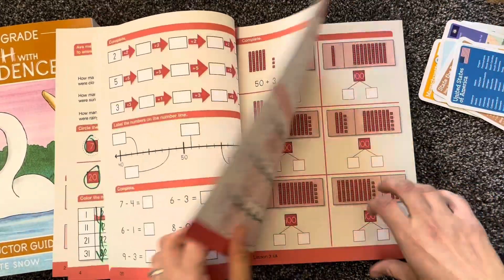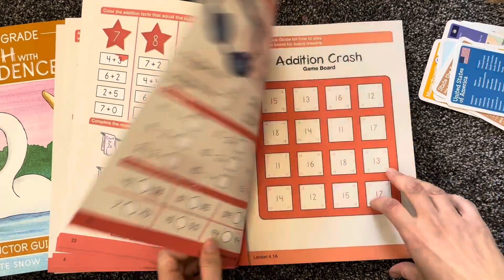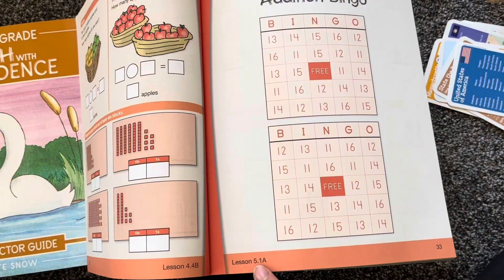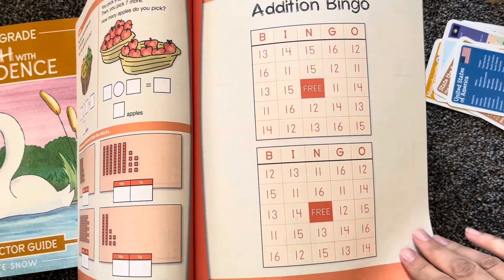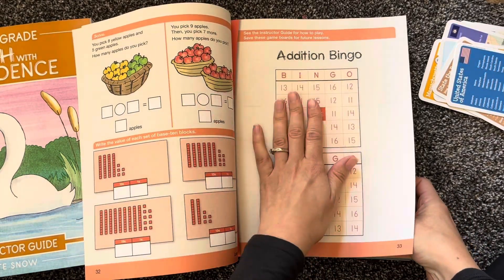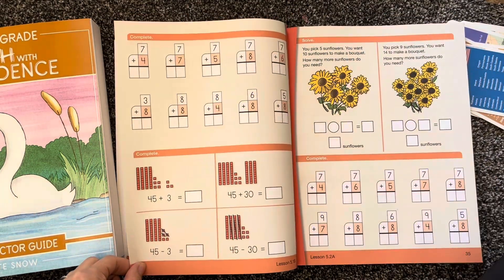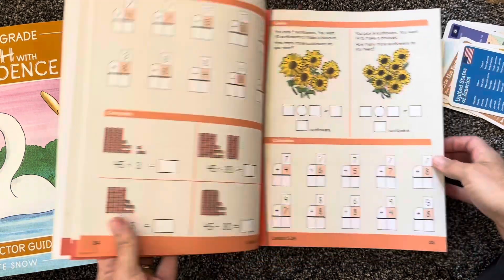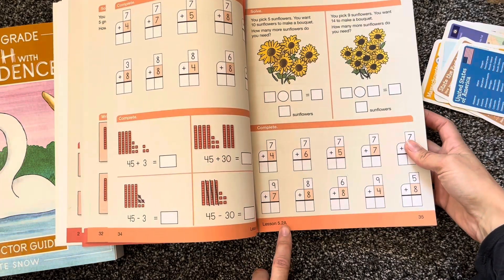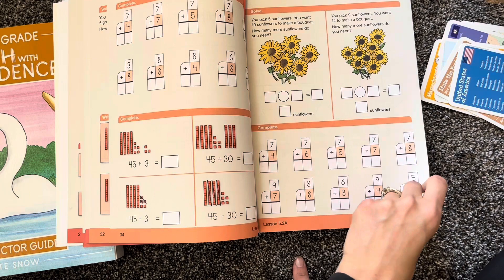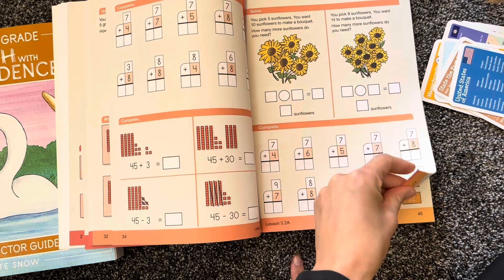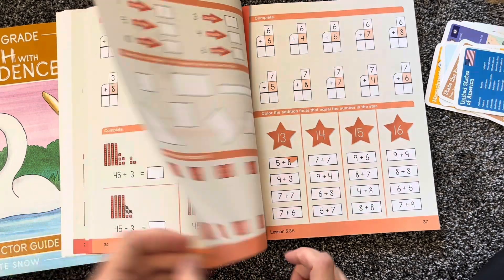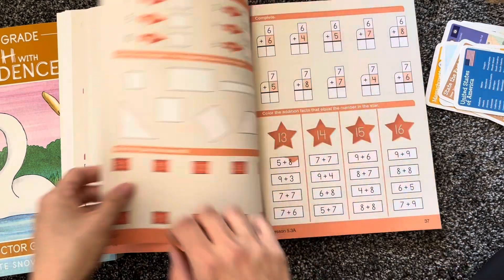One thing that I wanted to note was that each day you do a front and a back. So for example, lesson 5.1 - we would play this game and then they would do the back. So that would be a front and a back. Then the next day we have lesson 5.2, and the A just stands for the new material that you've practiced. And then 5.2B stands for review.